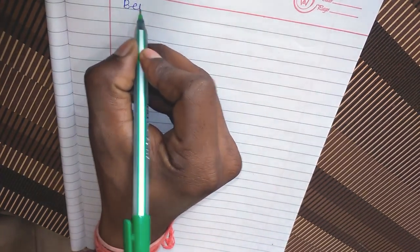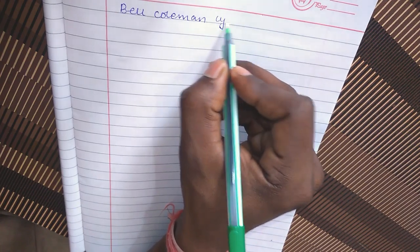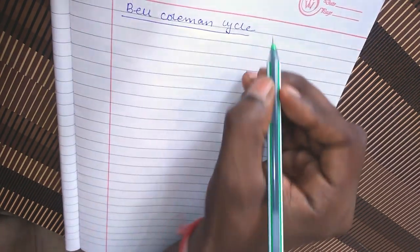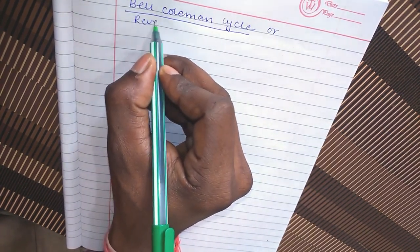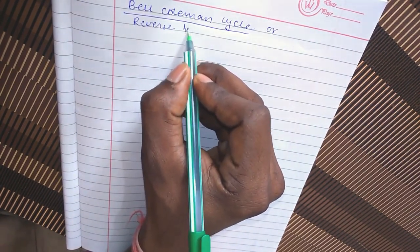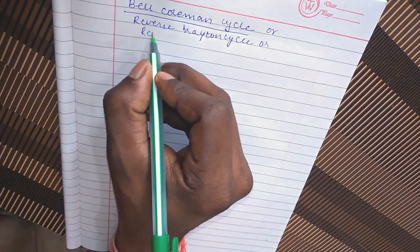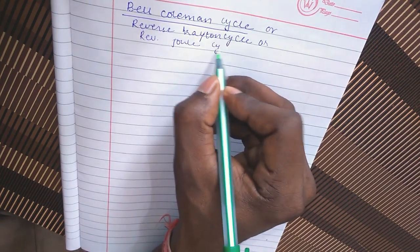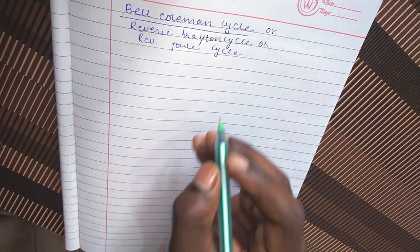So what is Bell Coleman cycle or Breton cycle or Reverse Joule cycle? Let's discuss Bell Coleman cycle or Reverse Breton cycle or Reverse Joule cycle. The setup for this is shown in the diagram.